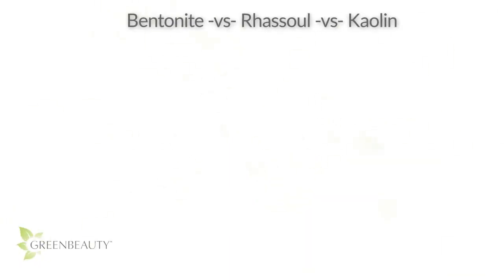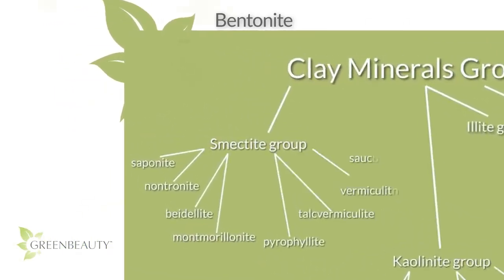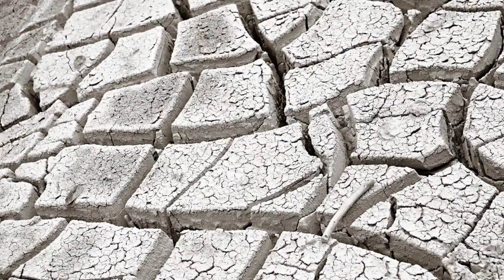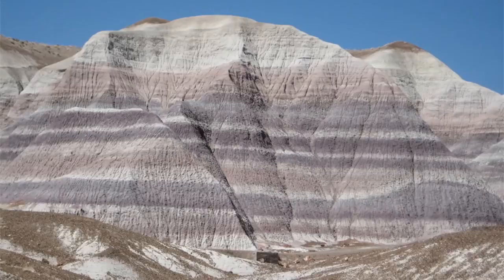In this video I'm going to compare the physical and chemical differences between bentonite clay, rasul clay, and kaolin clay. Bentonite clay is part of the smectite group, consisting mostly of montmorillonite. It's made from volcanic ash that settled in ancient seas and transformed into clay minerals over time.